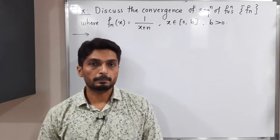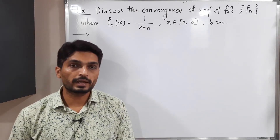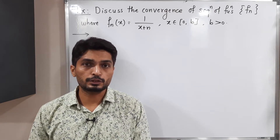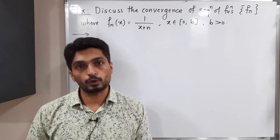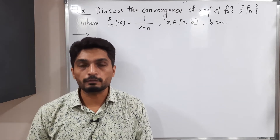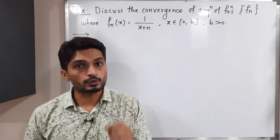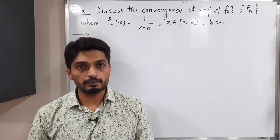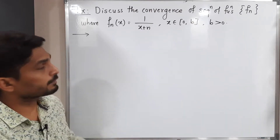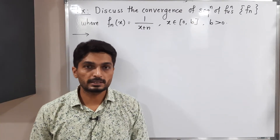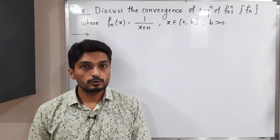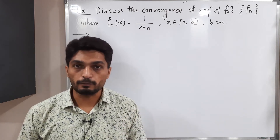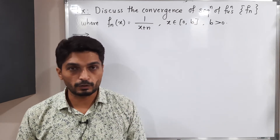Let us discuss this example. We have a sequence of functions and we have to check whether that sequence of functions is convergent or not. If it is convergent, then we are going to discuss whether it is uniformly convergent or not. So let us consider the given function: fn(x) = 1/(x+n), where x is taken from the closed interval [0, b], where b is any positive real number.